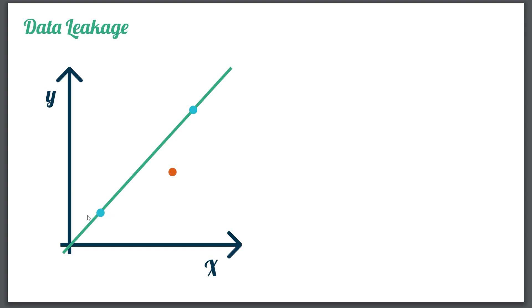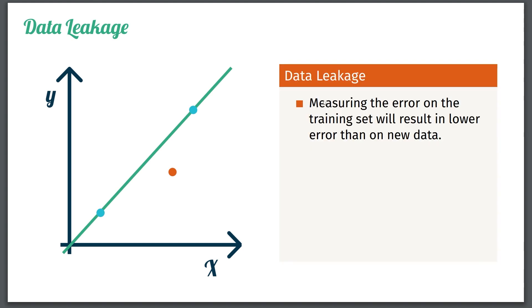That was how to measure the error. But here comes the problem. If we have two data points and we fit a model through them, the line passes exactly through those points, giving MSE of 0 on the training set. But those points don't need to be representative of new data — a new data point could have a non-zero error. So we cannot use the training set to evaluate our model, as it will always result in a lower error than the actual error on new data.